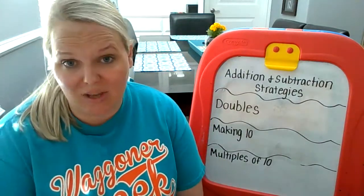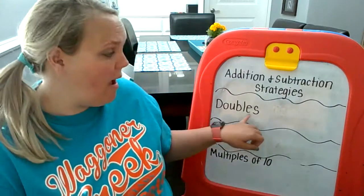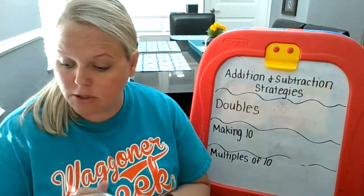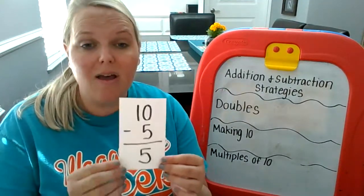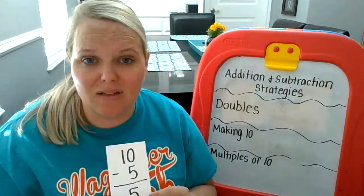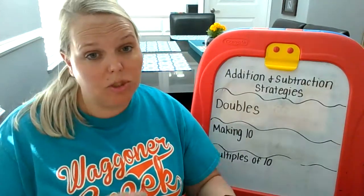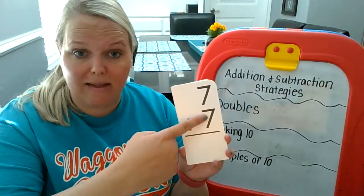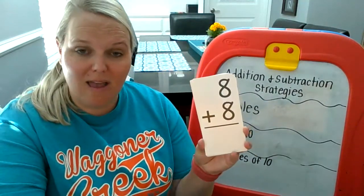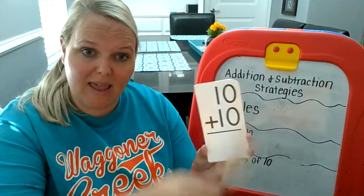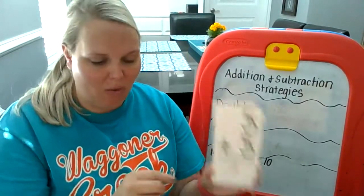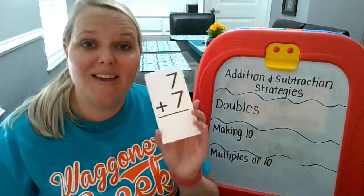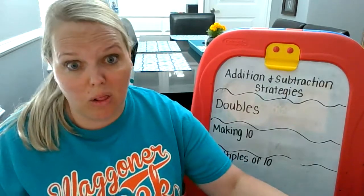Let's start talking about our strategies that we can use. I want us to make sure that we all know our doubles facts. So this week at home, I would like for you to create, either using note cards or pieces of paper that you cut out, cards called flashcards. I want you to make sure that you know your doubles automatically. Doubles are when a number adds with the same number. So 7 plus 7 is 14, 8 plus 8 is 16, 4 plus 4 is 8, 10 plus 10 is 20, and so on. I want you to know these automatically — you don't have to use your fingers — because if you know your doubles automatically, then you can figure out a lot more problems.